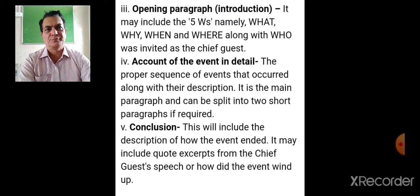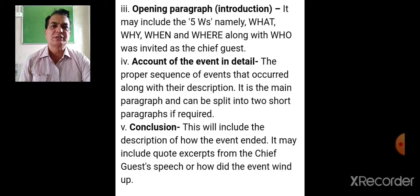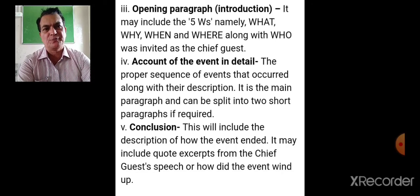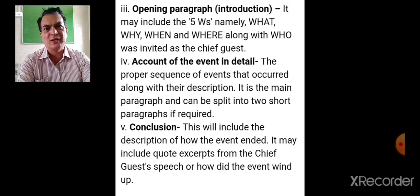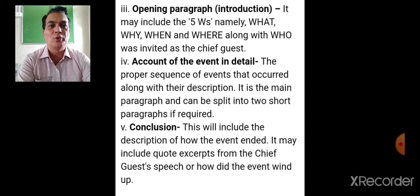The opening paragraph is the introductory paragraph and should contain answers to the wh-questions: what, why, when, where, and who was invited as chief guest. The main body paragraph gives a proper sequence of events along with their description, and can be split into two short paragraphs if required. The conclusion describes how the event ended — it may include quotes or excerpts from the chief guest's speech or how the event wound up.